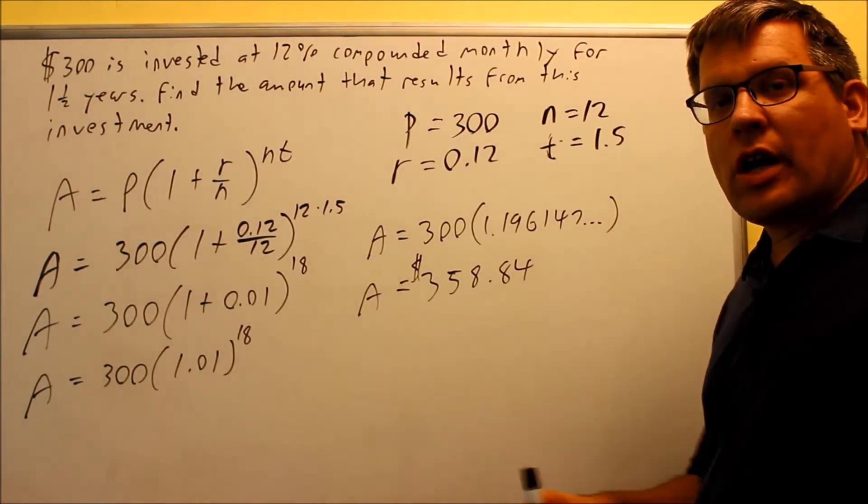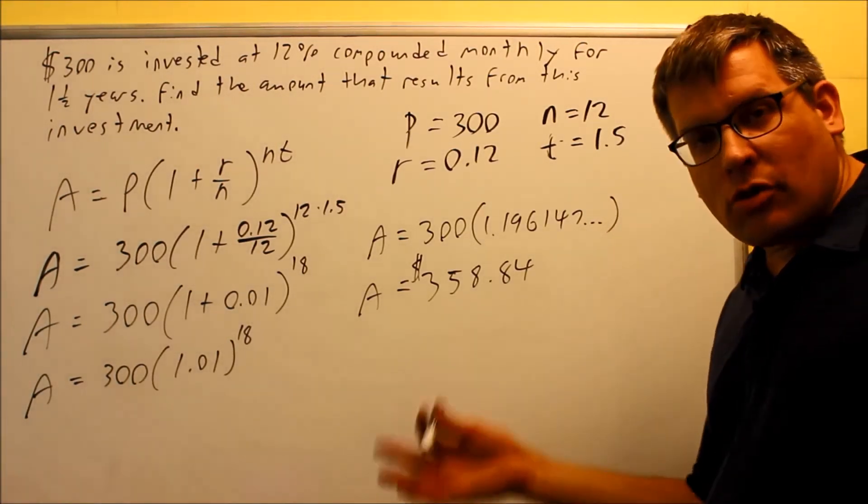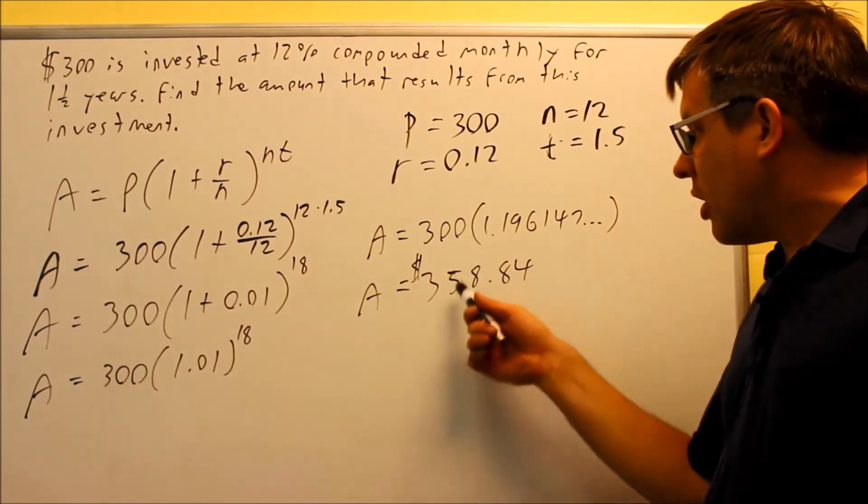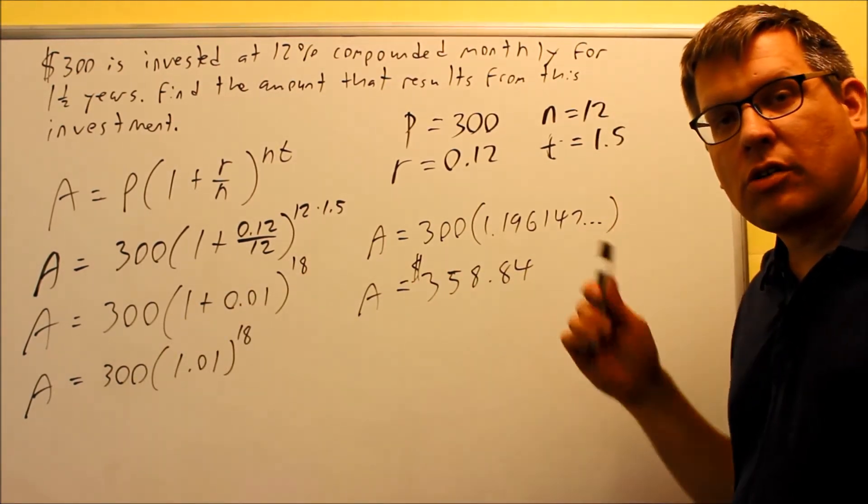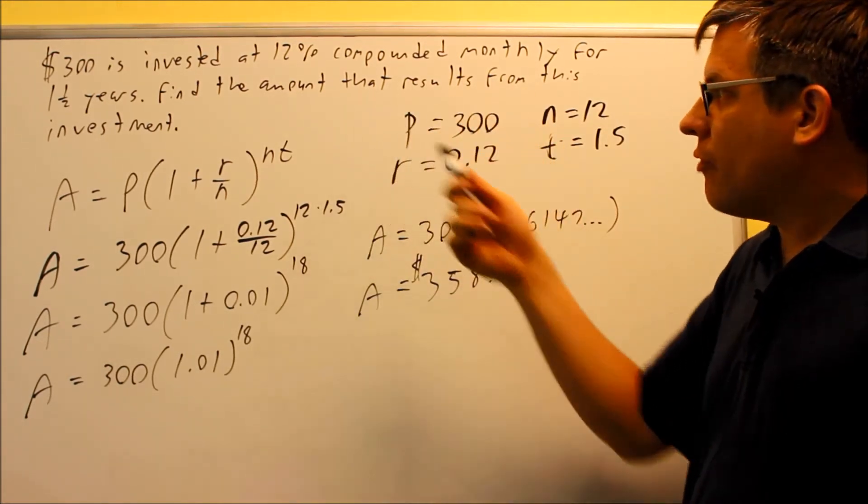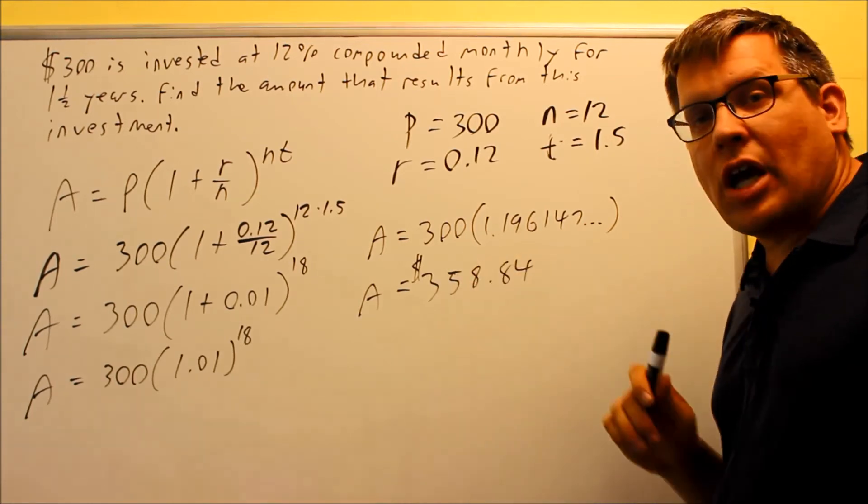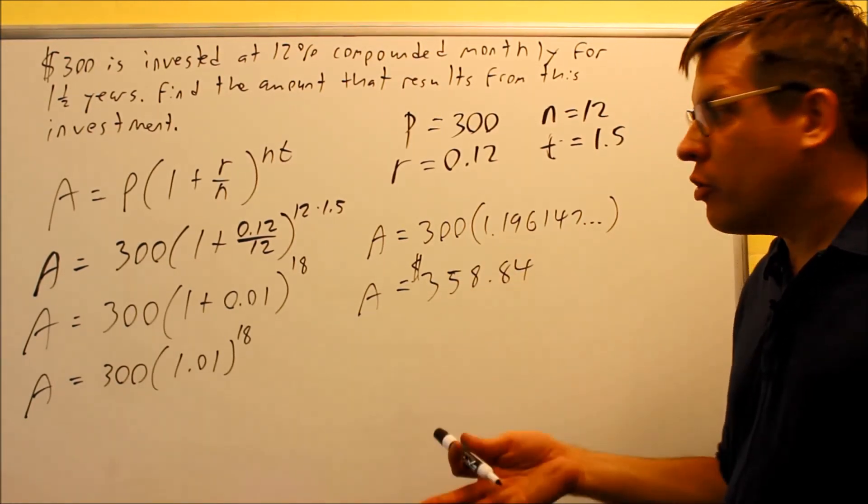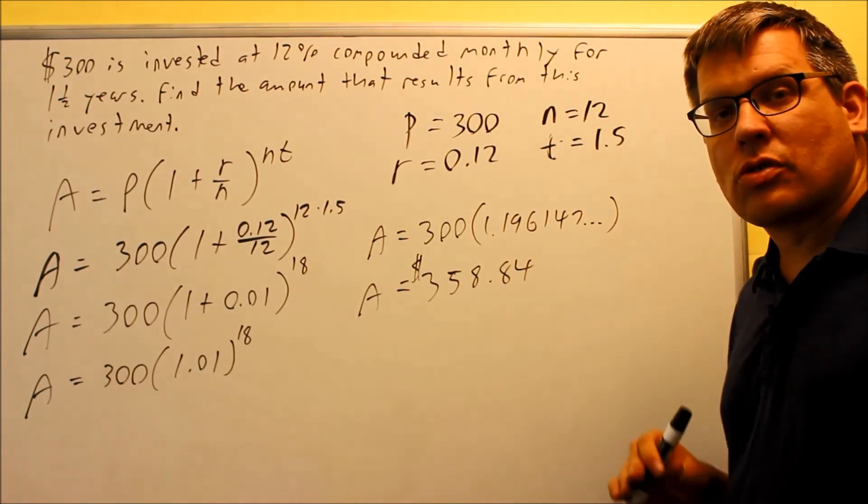So if the question asks for how much money do we make for interest, you would just take this number minus the 300, and that would tell you that you would have $58 would be your actual interest. This one only wants the amount that results from the investment, which means the amount you have here would include the extra interest. This is pretty much what would be in your bank account after that interest has already been added.